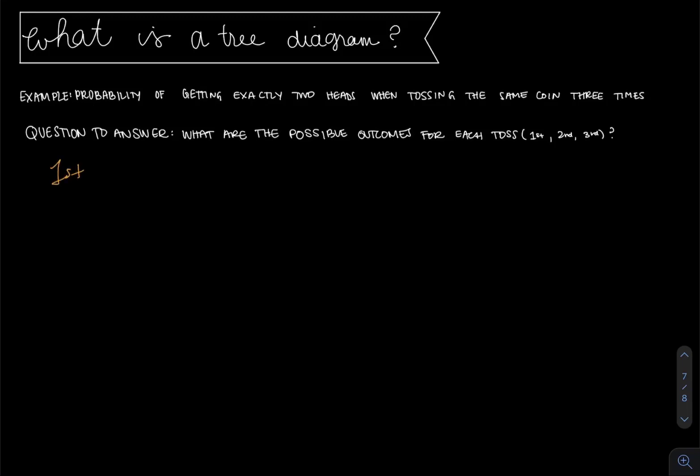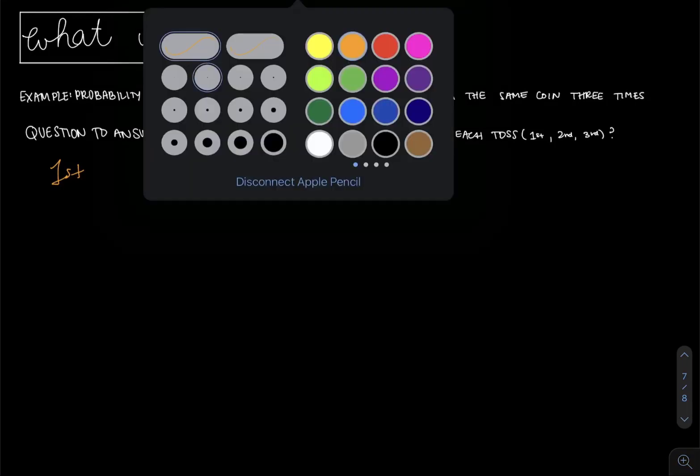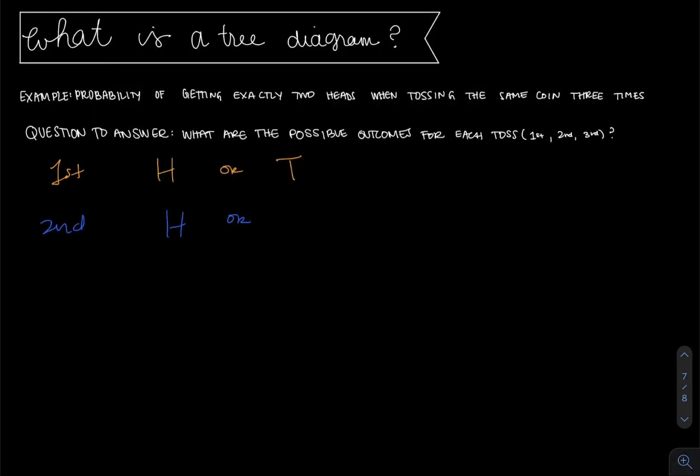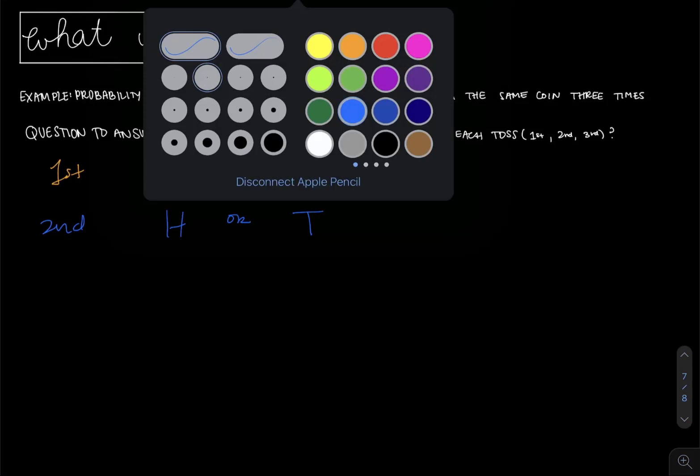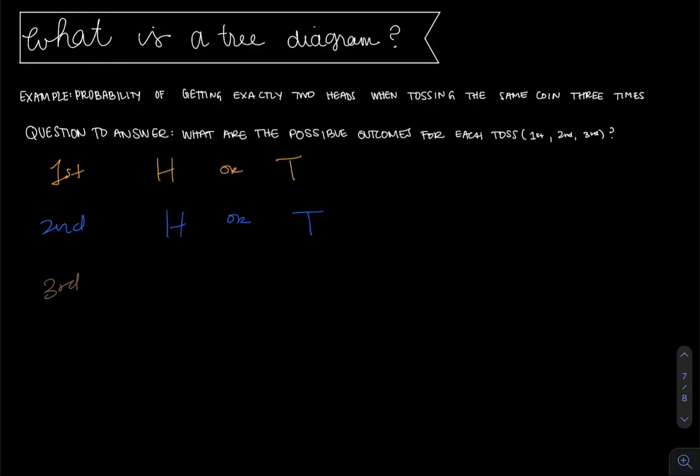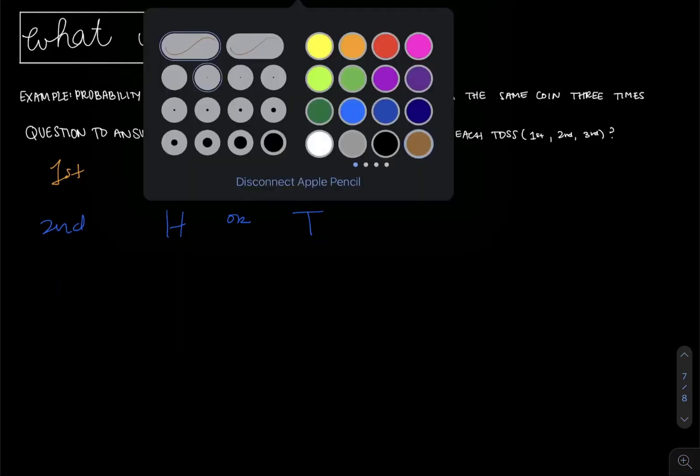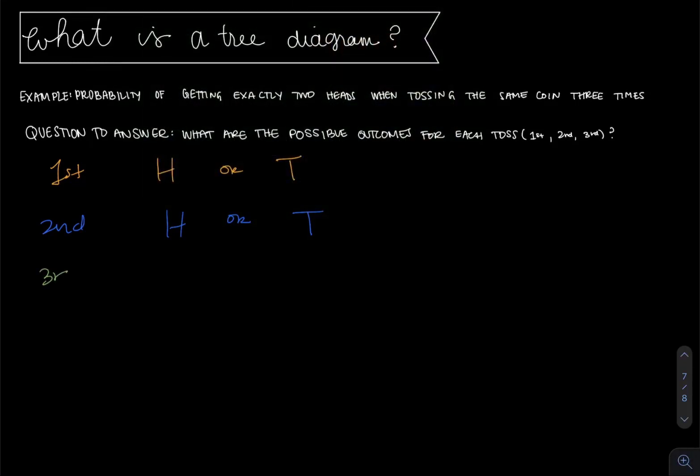For the first toss, we could get heads or tails. For the second toss, we could get heads or tails. And for the third toss, let's use a different color, heads or tails.